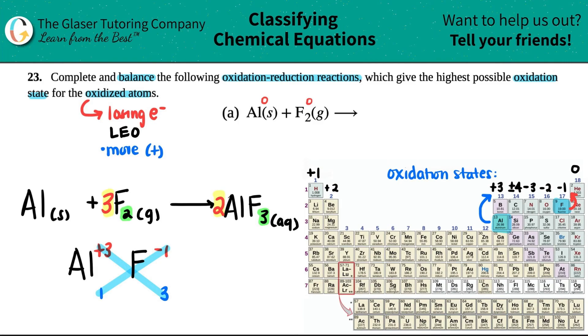And now we just got to balance the aluminum. Let's see, I have one aluminum on this side. I got two aluminums on this side. So what number am I going to put in front of the aluminum on the reactant side? Yeah, definitely a two. And now we did it, guys. We completed it. We balanced the oxidation reaction. And we made sure that aluminum, which was the one that was oxidized, got the highest number. And that number was a plus three.